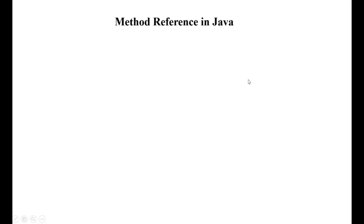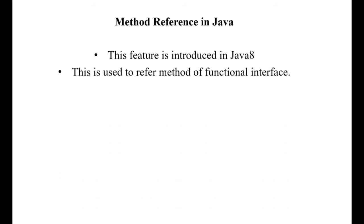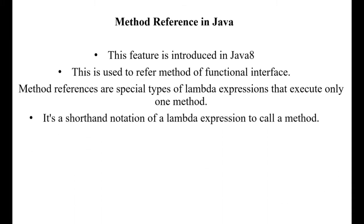Method reference in Java - it is in Java 8, it's used to refer a method of a functional interface. This is a special type of lambda expression; it will exist only for one method. You can see it's the shorter notation of lambda expression. Let's see the example.